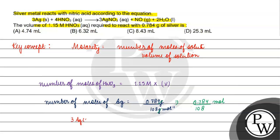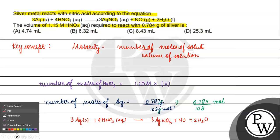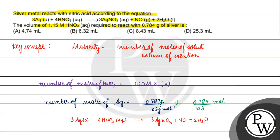What has been given? We have 3 moles of Ag solid plus 4 moles of HNO3 gives us 3 moles of AgNO3 plus NO plus 2 moles of water. So in this reaction, we have 3 moles of Ag reacting with 4 moles of HNO3.